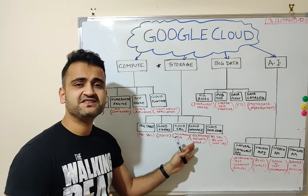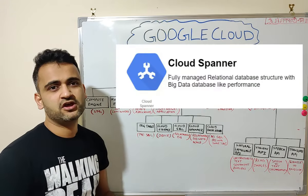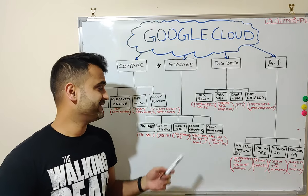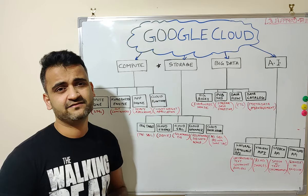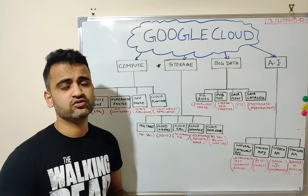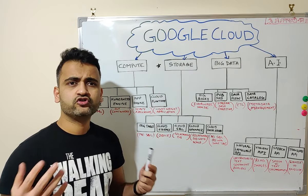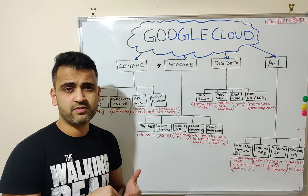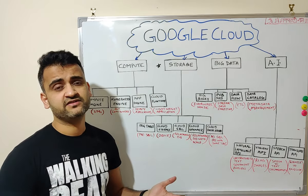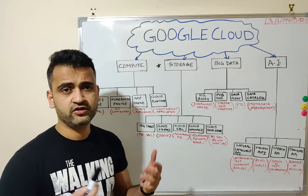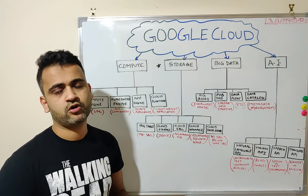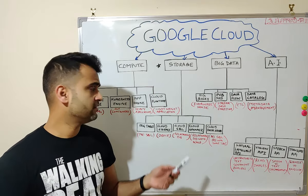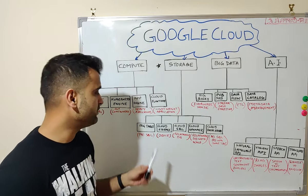Cloud Spanner can be considered the big brother of Cloud SQL. Cloud Spanner is a relational database with big data capabilities — you can think of it as combining Cloud SQL and BigTable capabilities. Cloud Spanner offers massive scale and the ability to run big data loads with SQL support. It should be your go-to product if you have massive database needs with large amounts of data and high performance requirements, but with relational data structure.